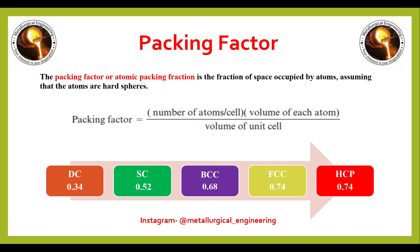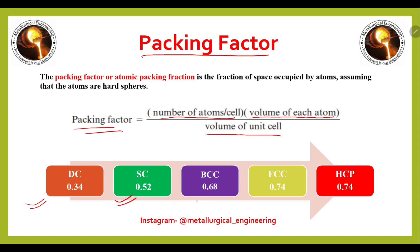The first topic is packing factor. The atomic packing fraction is the fraction of space occupied by atoms, assuming that the atoms are hard spheres. The formula is: number of atoms per unit cell multiplied by volume of each atom, divided by volume of unit cell. For diamond cubic this is 0.34, simple cubic 0.52, BCC 0.68, FCC 0.74, and hexagonal close-packed 0.74.